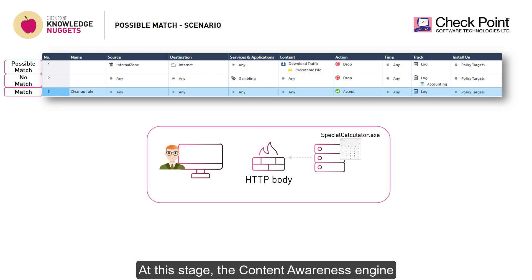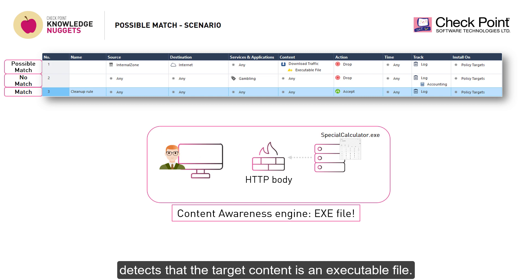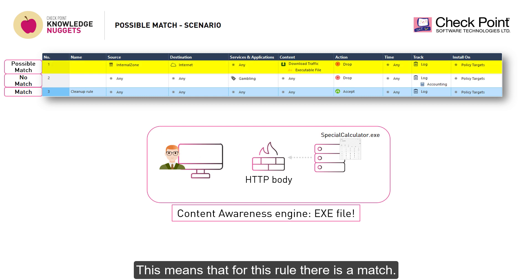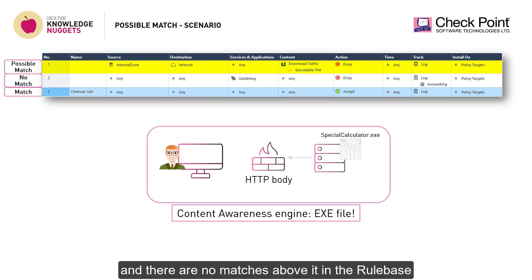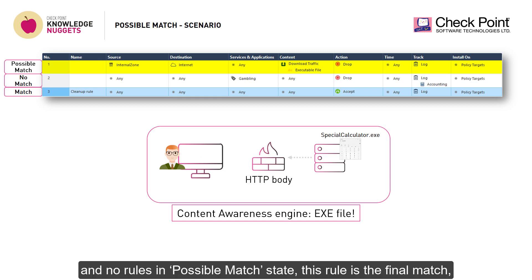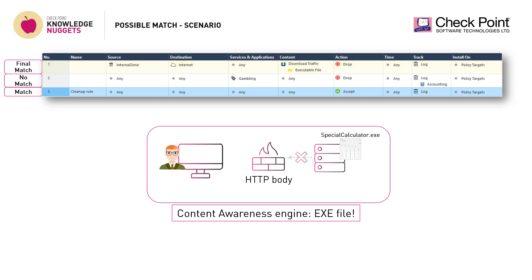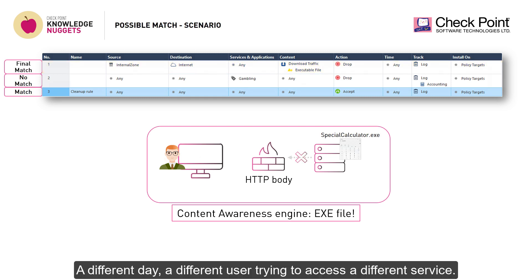Further packets flow with the HTTP body. At this stage, the Content Awareness engine detects that the target content is an executable file. This means that for this rule, there is a match. Since this rule is a match, and there are no matches above it in the rule base, and no rules in possible match state, this rule is the final match, and this connection is dropped.